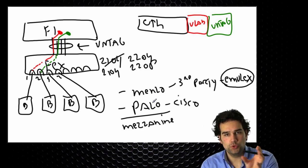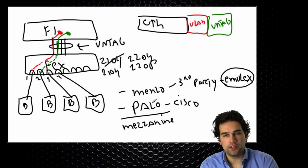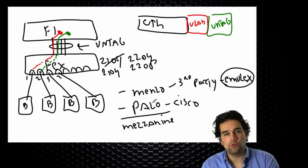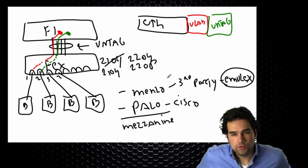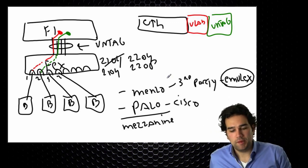I have two mezzanine slots then and then I can fit a Fusion IO card for example. So to have some local flash in the UCS server. But for our lab we only focus on that Menlo and the Palo card.